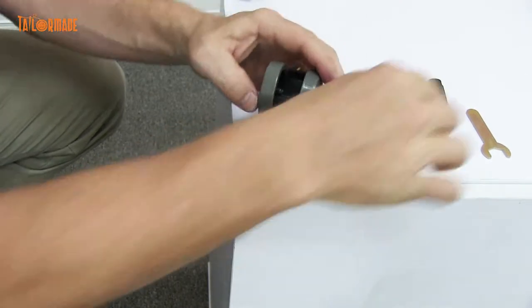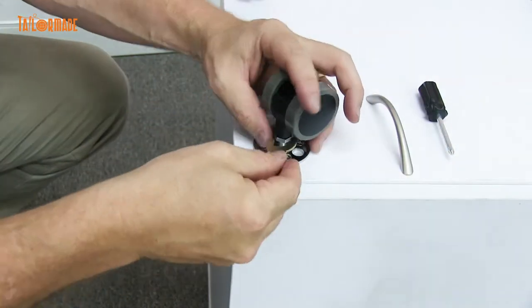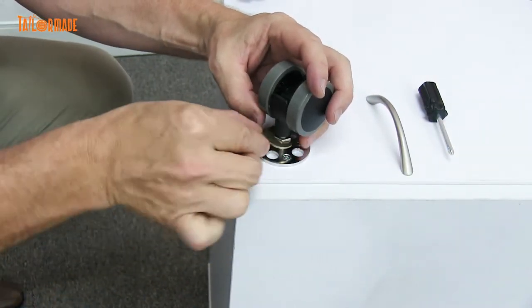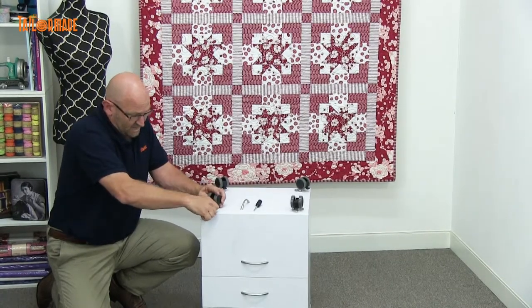Once you've got it to there, grab your spanner and tighten it all the way. You do want to make it a little bit tight when it gets down to the bottom. Just tighten it all the way like so, then go around and put all your casters on.